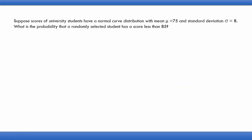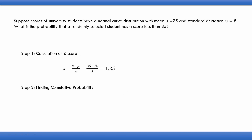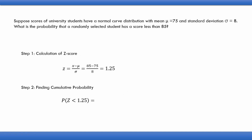Finally, one more example: the scores of university students are normally distributed with mean 75 and standard deviation 8. We need to find the probability that a randomly selected student has a score less than 85. Using the same two steps — first calculating the Z-score with z = (x − mu) / sigma gives z = 1.25. Then using the normal distribution table, identifying the row labelled 1.2 and the column labelled 0.05, the cumulative probability P(Z < 1.25) = 0.89435.